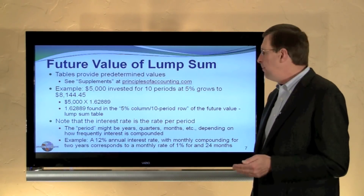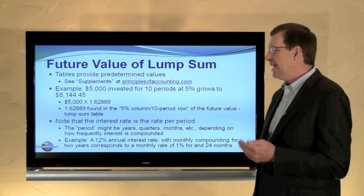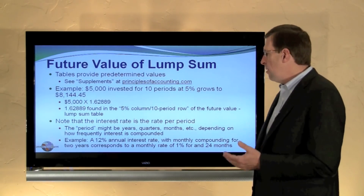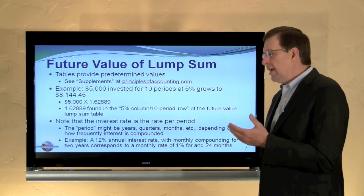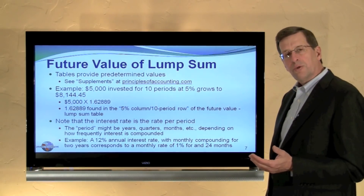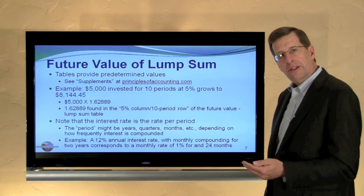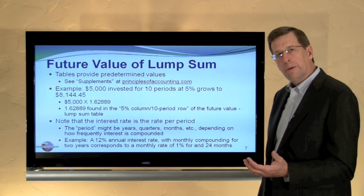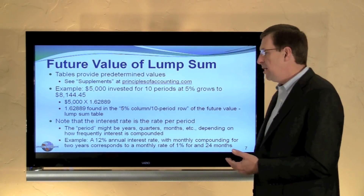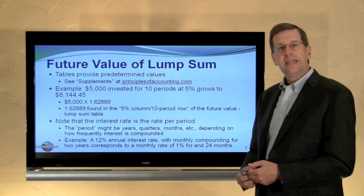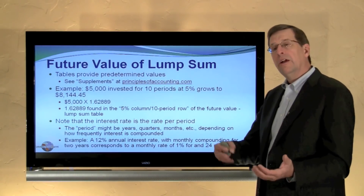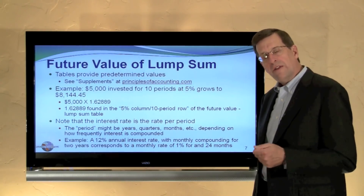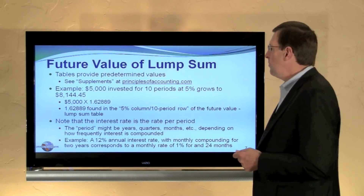When looking at the tables, it's important to note that the interest rate is the interest rate per period. A period can be a year, a quarter, or a month. For example, if we have a 12% annual interest rate but we're compounding interest every month rather than every year, then we're no longer dealing with a 12% interest rate per period. If it's a two-year span, we're instead dealing with 1% per period for a total of 24 periods, so we would look at the 1%, 24-period cell in the table.